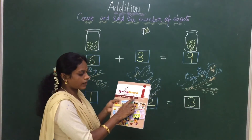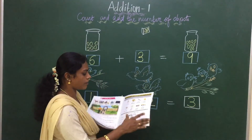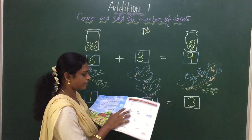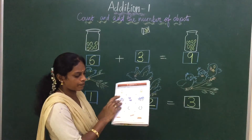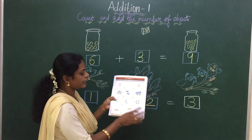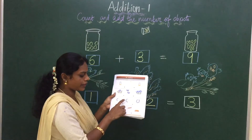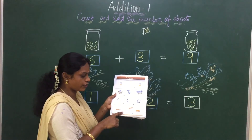Take out room number 7 and come to page number 37. Teacher has done 2 for you, and the remaining 2 you have to do. Complete page number 37.